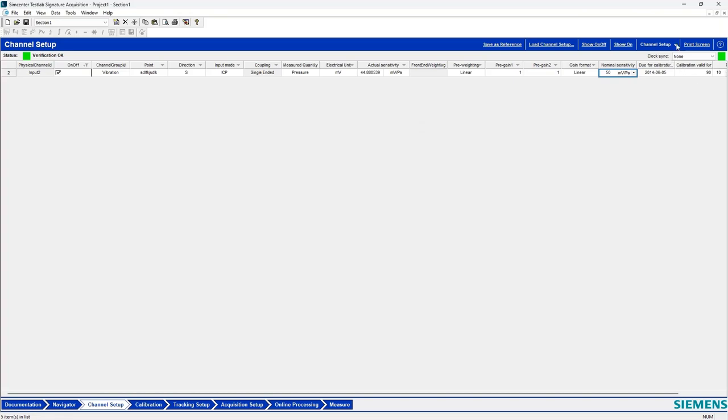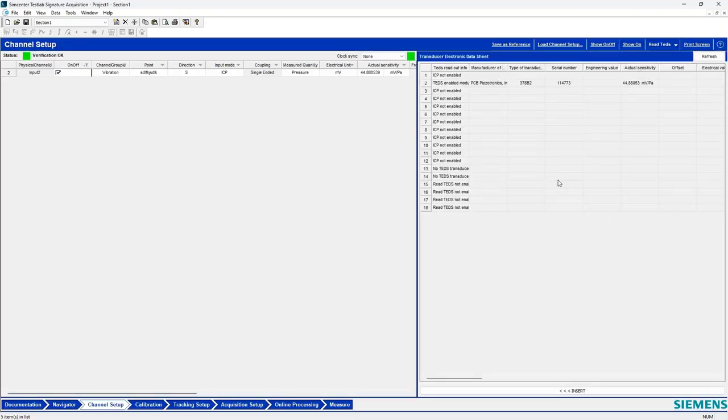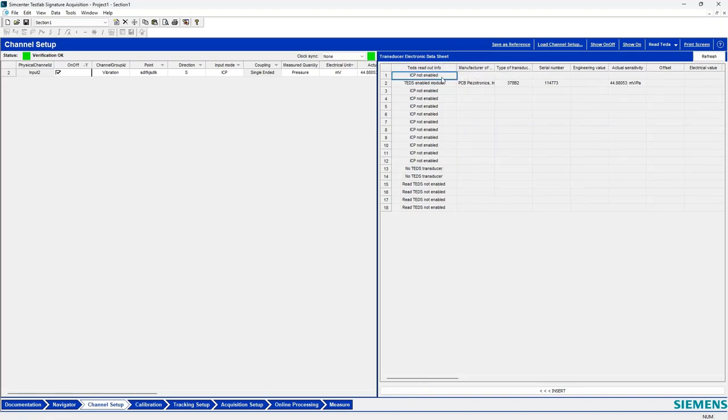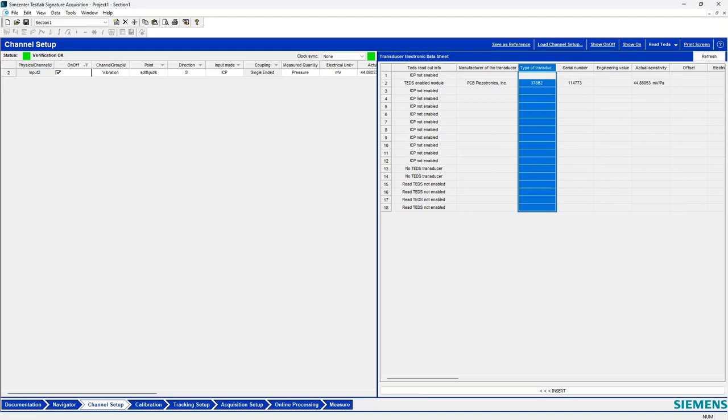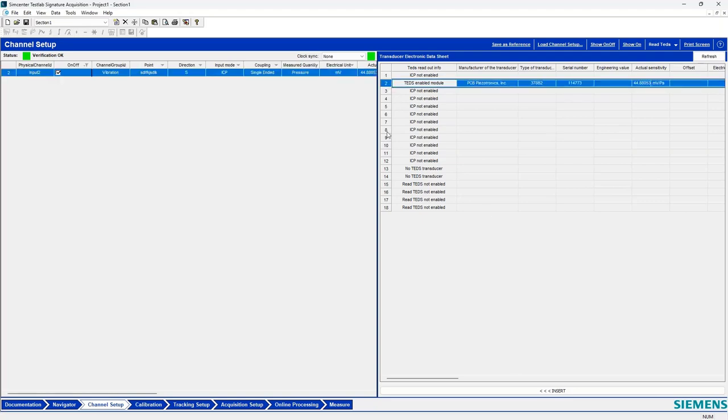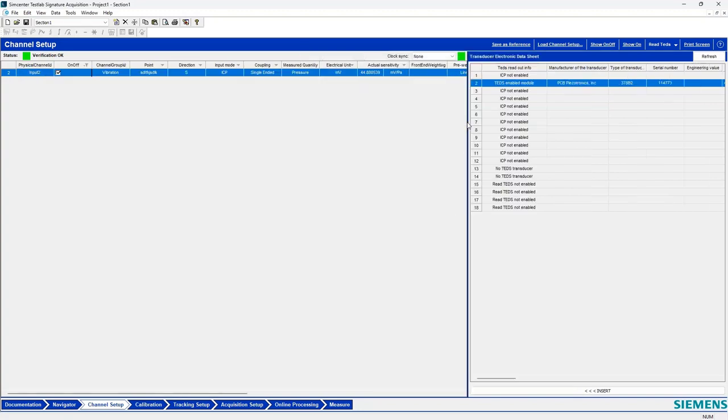Now, in TestLab, I also have the ability to read the TEDS. So if I go up here where it says channel setup, I can say read TEDS. And this side of the screen will change. Often I have to refresh. I've already done that for this setup. And so you see this stuff already filled in. Essentially, this is a TEDS-enabled module on channel 2. It is a 378B02. Its serial number's in here. And its actual sensitivity that's being read from that TEDS chip was 44.88 when it left the factory. If I want to move that over and include it in my channel setup, I can just select this row. It already knows where to go because I only have one turned on. And I can say insert. And all of that stuff will be moved over. So now my actual sensitivity is this updated TEDS value.